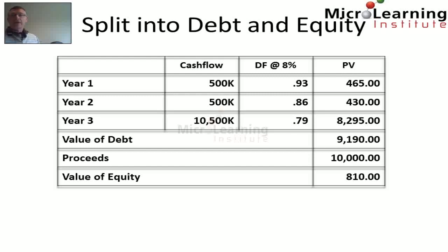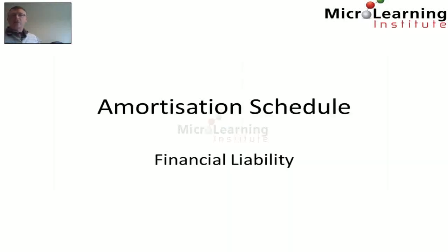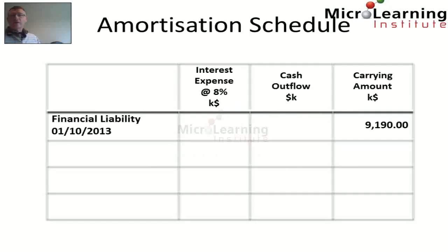Just for completeness, even though we are not asked for it in the question, let's look at the amortization schedule over the subsequent 3 years for this debt initially recognized at $9.19 million. At the 1st of October 2013, we have initial recognition of the financial liability at $9.19 million.